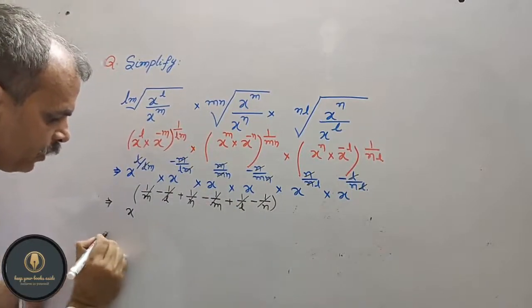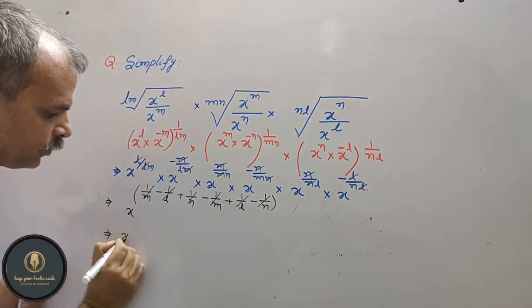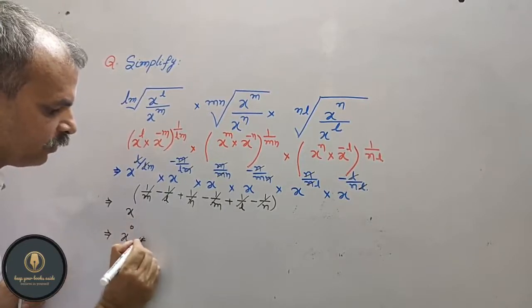So what do we get? x to the power of zero, and that is equal to 1.